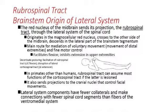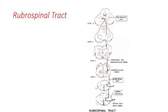The rubrospinal tract also sends projections to the cranial nuclei that control facial movements on either side, innervating more lateral musculature. The lateral system components have fewer collaterals and make connections with fewer spinal cord segments than fibers of the ventromedial system — the ventromedial system is very well connected with the spinal cord. This is a diagram of the rubrospinal tract, showing the crossing over immediately from the red nucleus to the other side, then descending down the lateral columns.